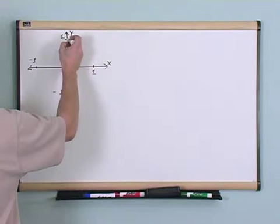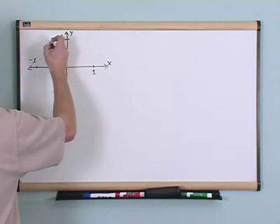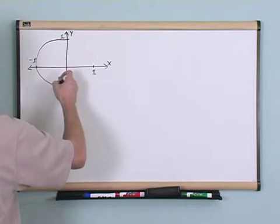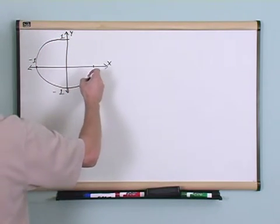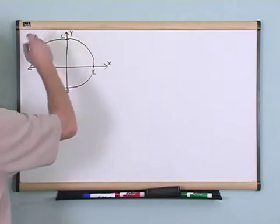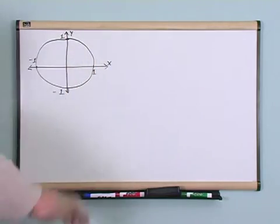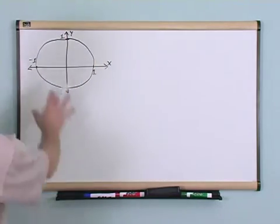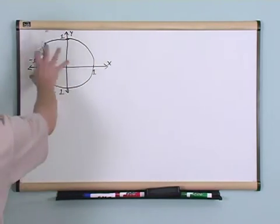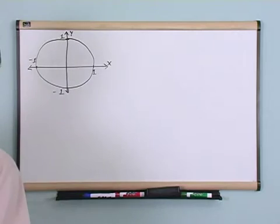We draw what we call a unit circle, which just means it's a circle with radius 1. If you remember back, that's how we derived this — and my circle doesn't look too centered on the axis, but it's not going to matter too much here in a moment.